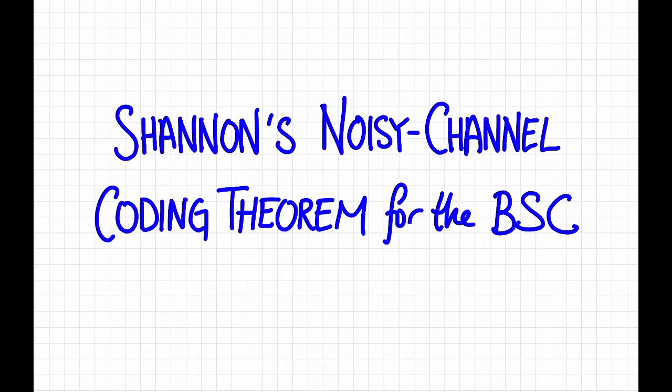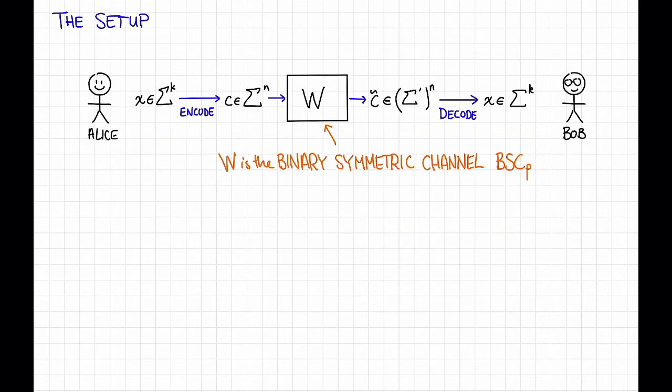In this video we'll state Shannon's noisy channel coding theorem for the binary symmetric channel and sketch the proof. Let's quickly recall the setup from the previous video. We have a sender Alice who wants to send a message to receiver Bob as usual, and the thing that's different from our normal setup is that we now have a random channel W introducing the noise.